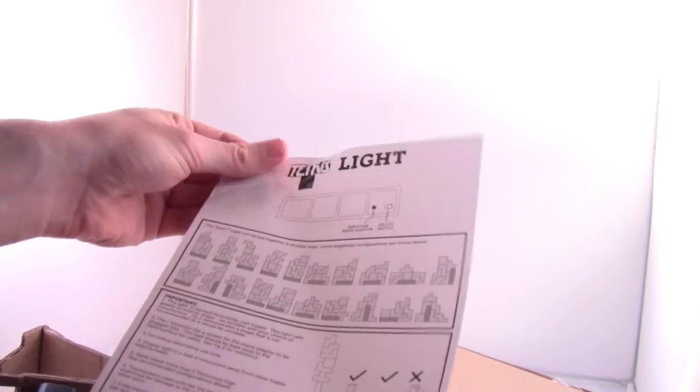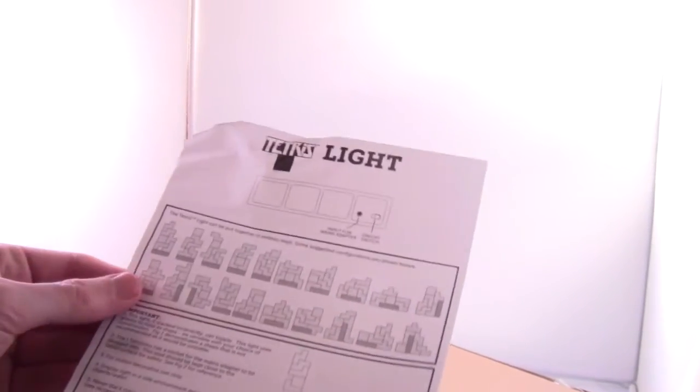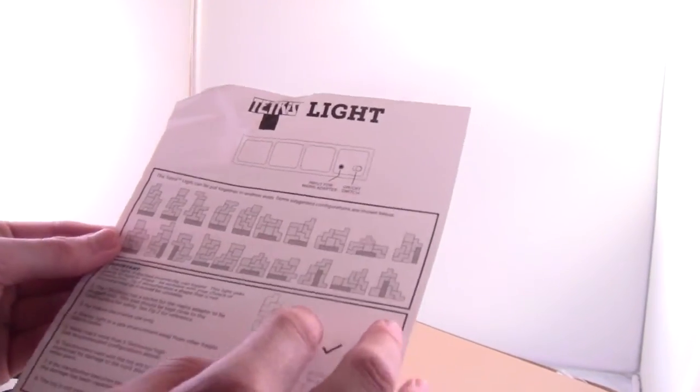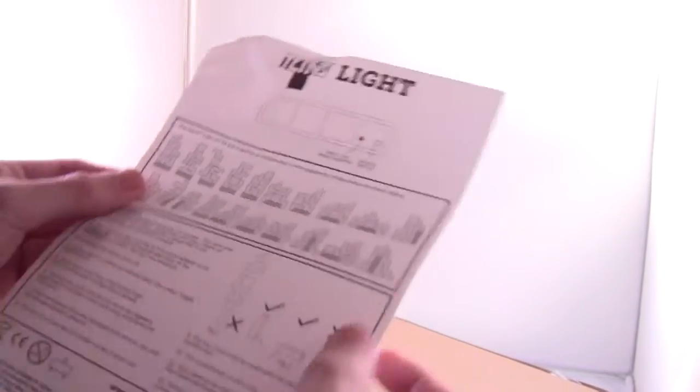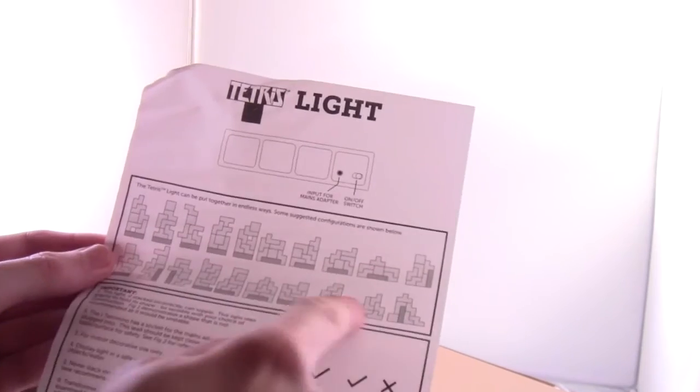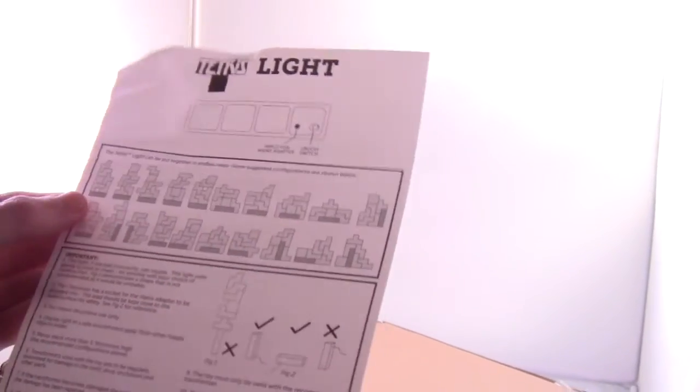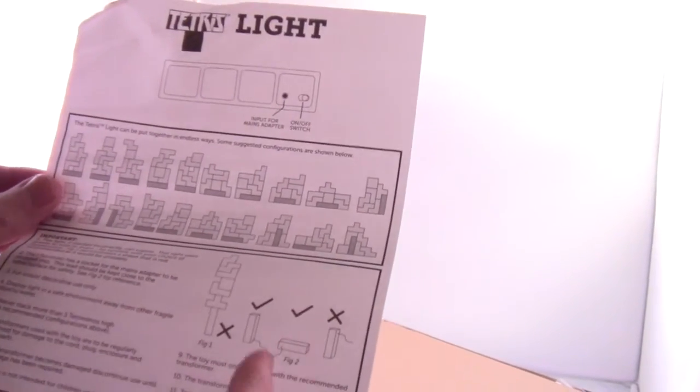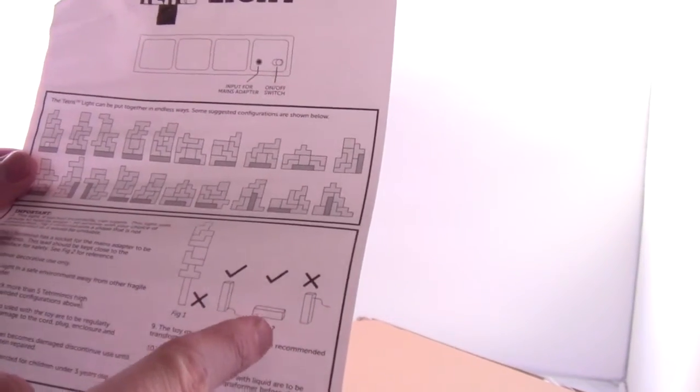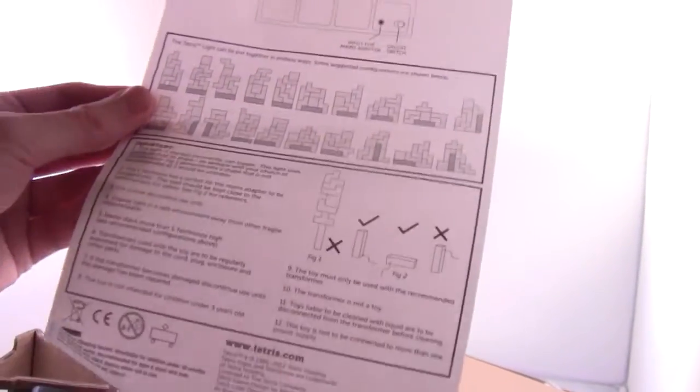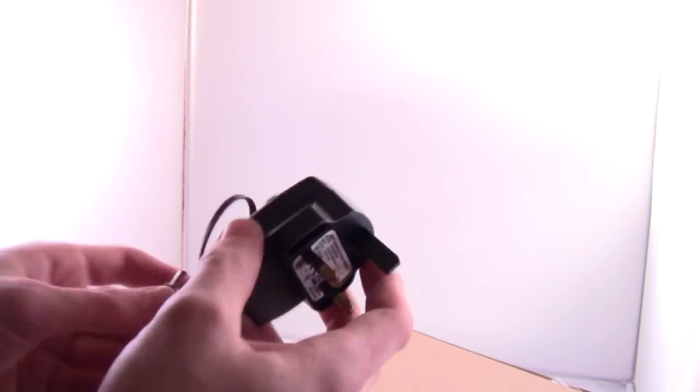We have a little instruction manual here on one sheet of paper. There are many different combinations that you can use. It also says some things that you can do and some things that you shouldn't do, plus some important information.